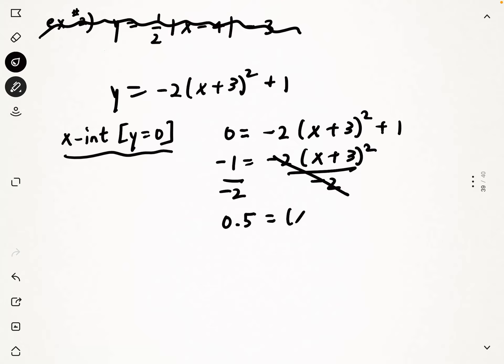So I get negative over negative is a positive 0.5. You can use decimals here. And then I can get the square root of both sides to get rid of that square. So I'm going to get the square root of the right side is x + 3. The square root of the left side, I have to remind myself that I have to do the plus or minus square root.